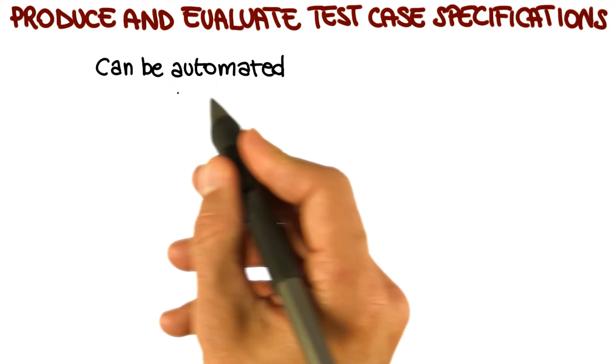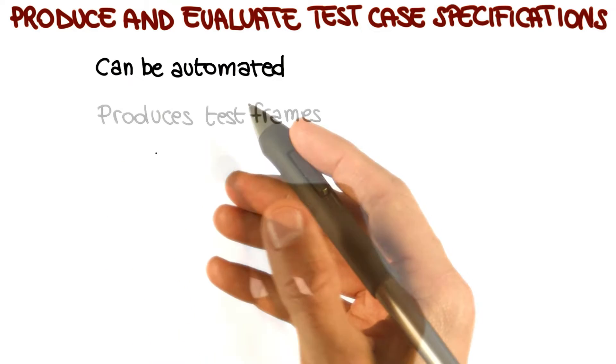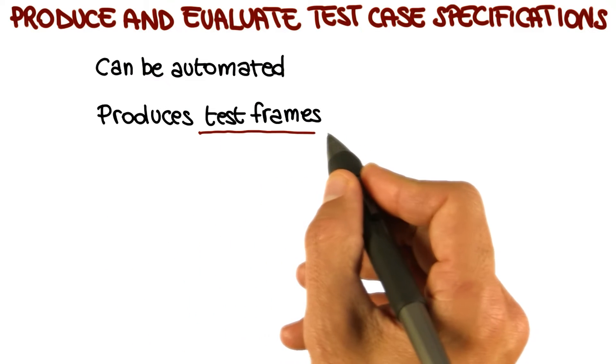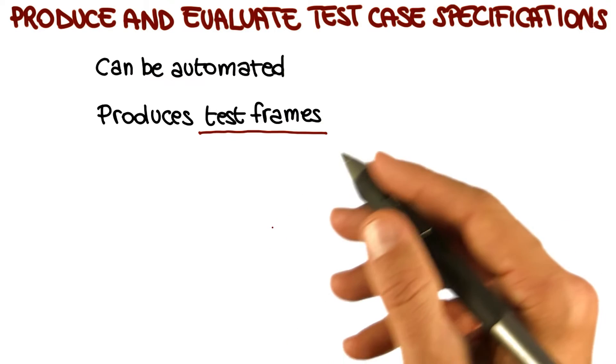This is a step that can be completely automated, given the results of the previous steps. And the final result of this step is the production of a set of test frames, where a test frame is the specification of a test. Let me show you an example of this.